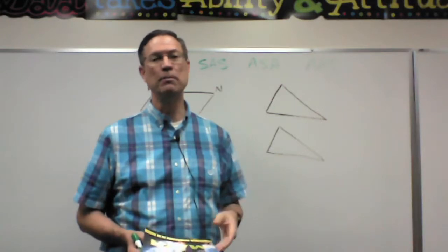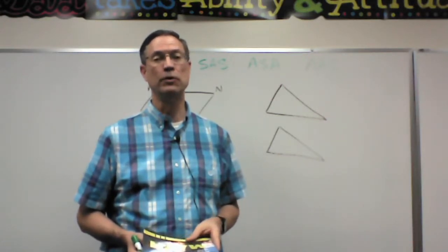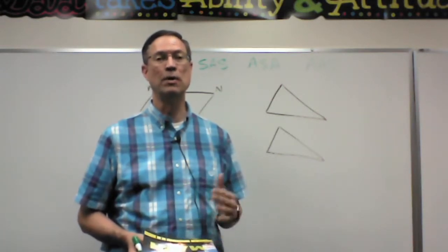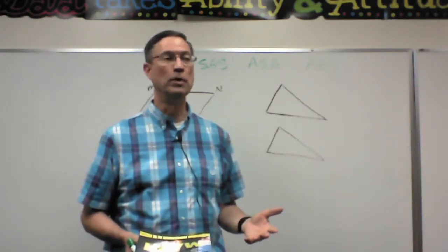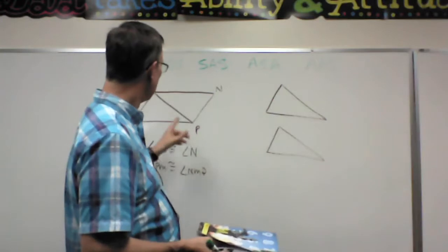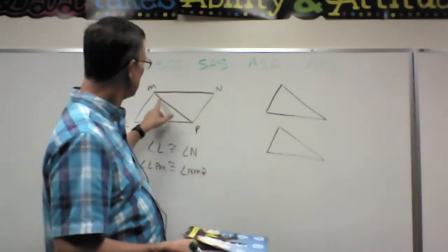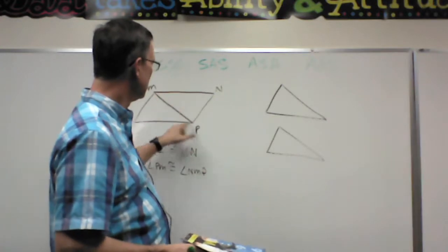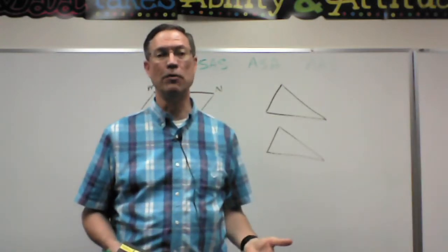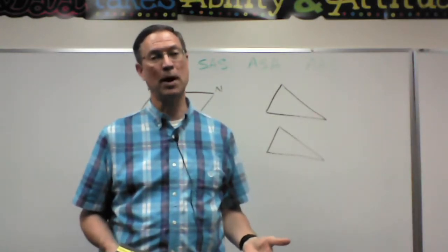The only thing you can assume is like if there are two lines intersecting and you have vertical angles, you can always assume vertical angles are congruent. Or if, like in a case like this, this line is shared between these two triangles, and so that line will be congruent to itself and of course that's the reflexive property.